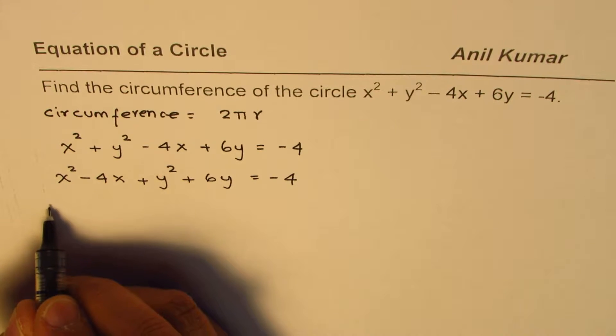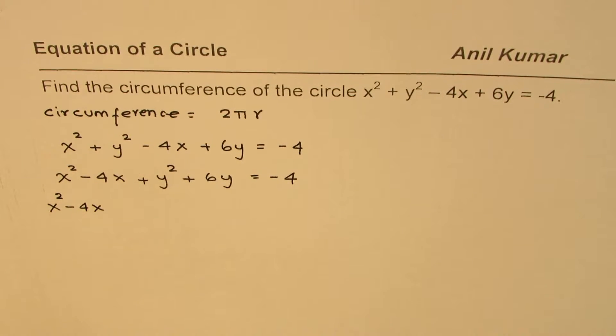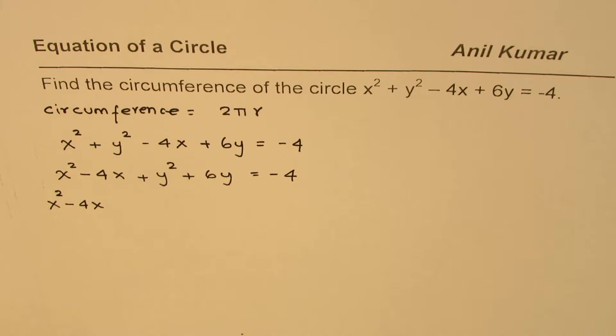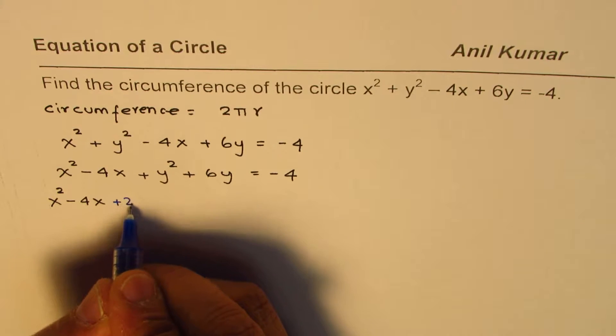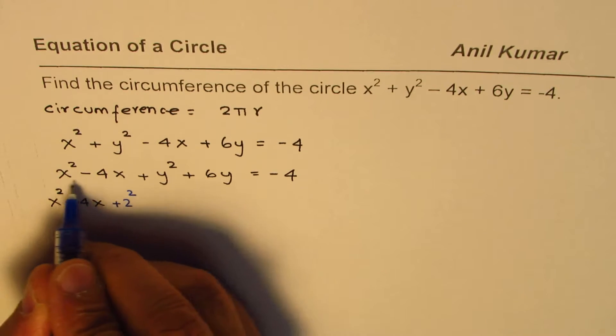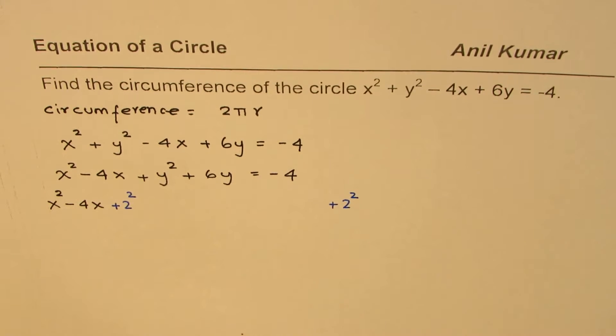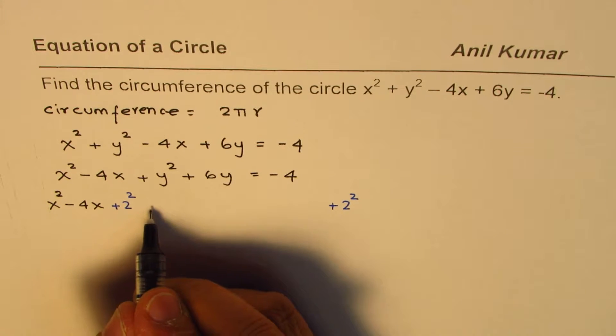So in this particular equation we'll have x square minus 4x. We will add 2 square on both sides, so we'll do plus 2 square here so that we make this a perfect square and we'll add plus 2 square on the right side also. So that will complete the square for the x values.